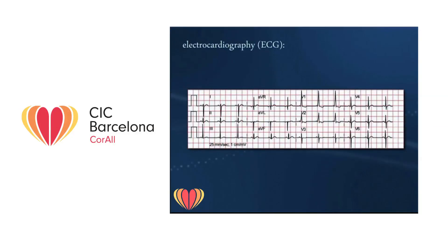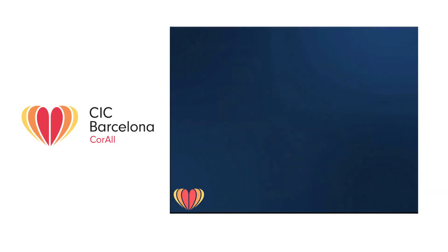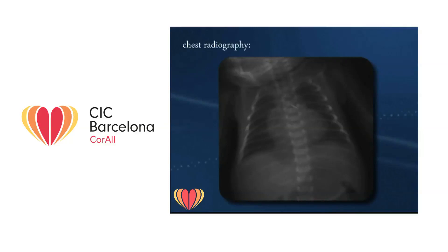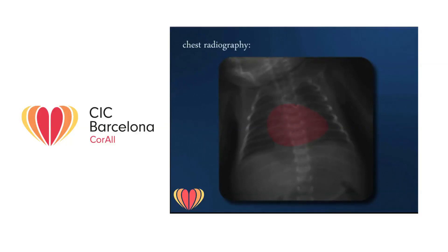Electrocardiography shows marked right ventricular hypertrophy. Chest radiography usually shows a common feature of transposition of the great arteries: the so-called egg-shaped heart, due to the fact that the two great arteries are superimposed in the anteroposterior projection.